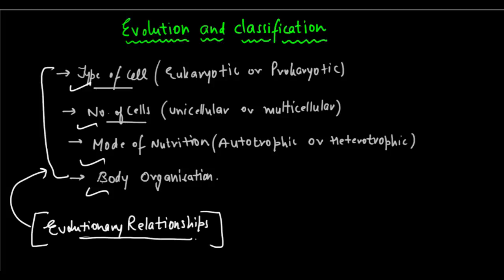If there is similarity in these factors between two organisms, we say that they are closely related. If they have less similarity, they are less closely related. And if they have no similarity at all, most probably they are not related to each other.